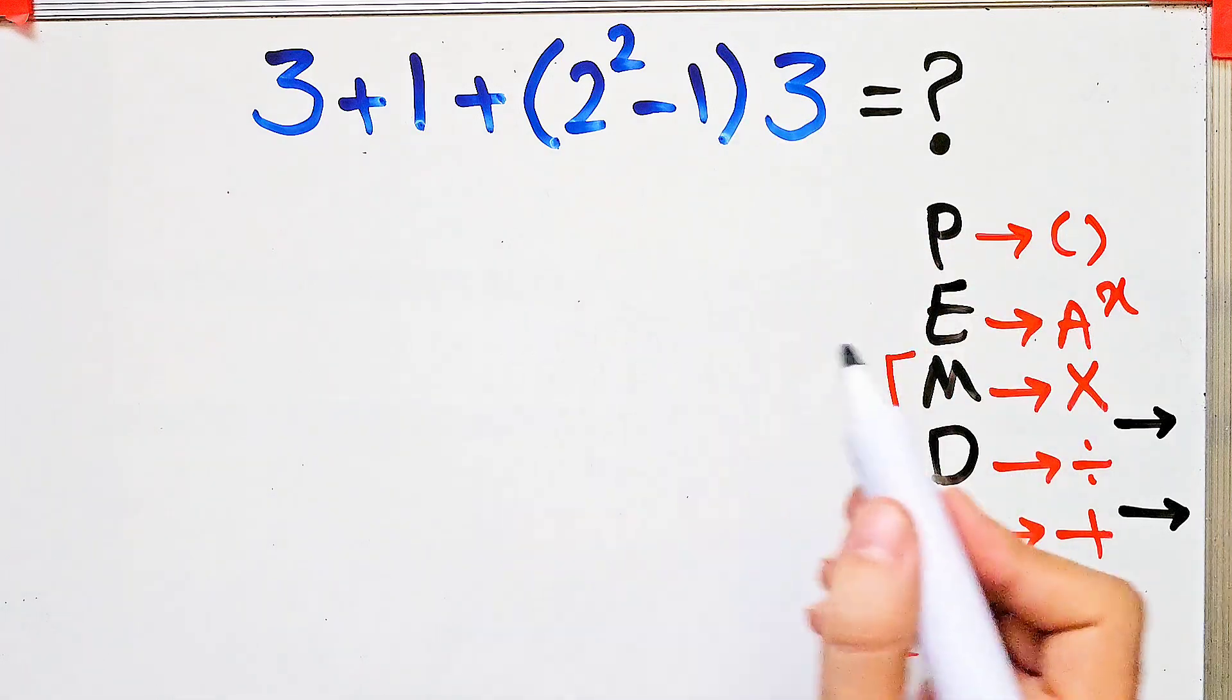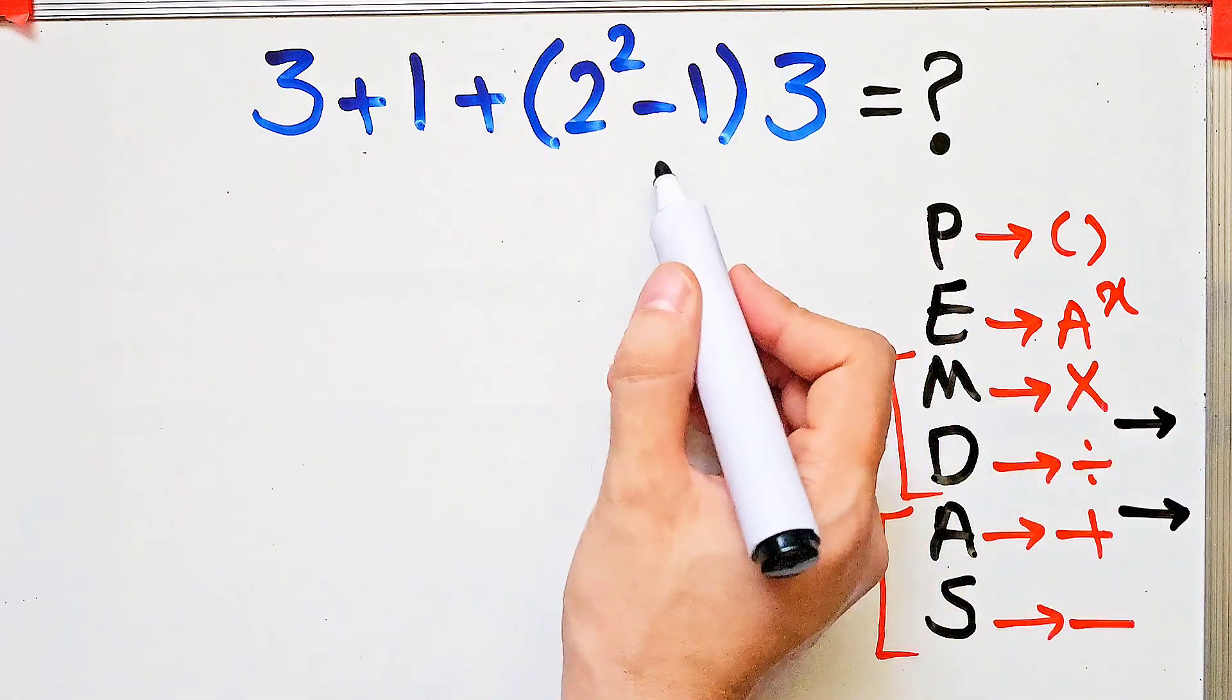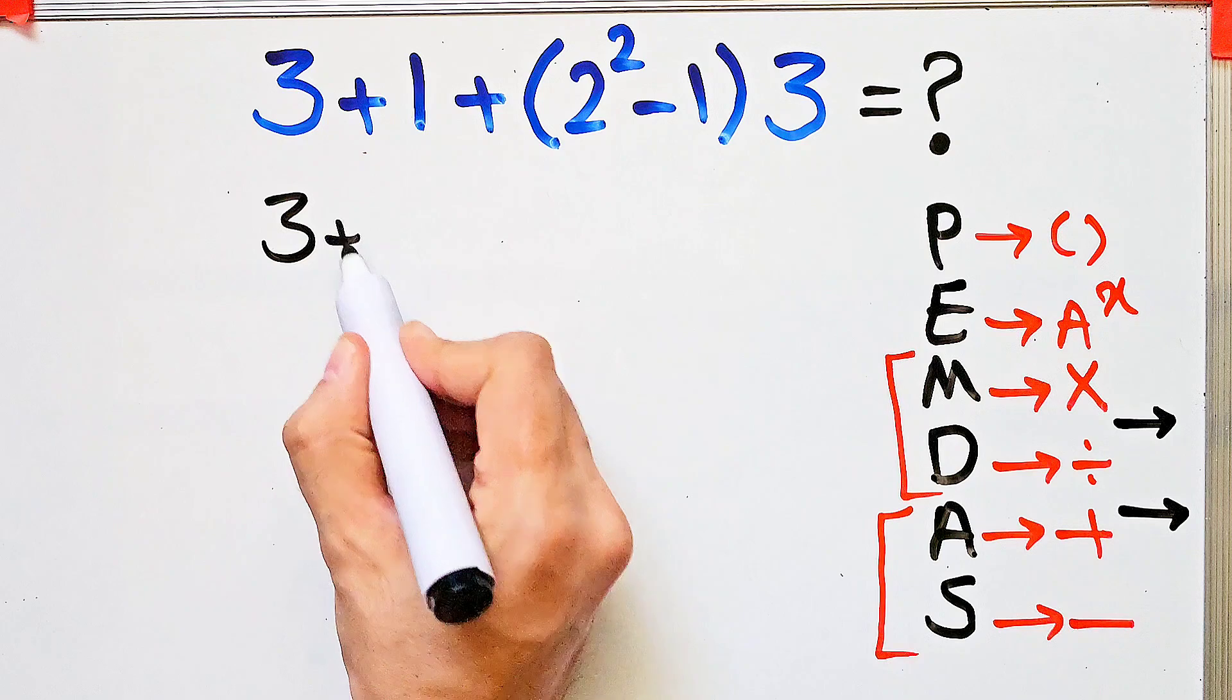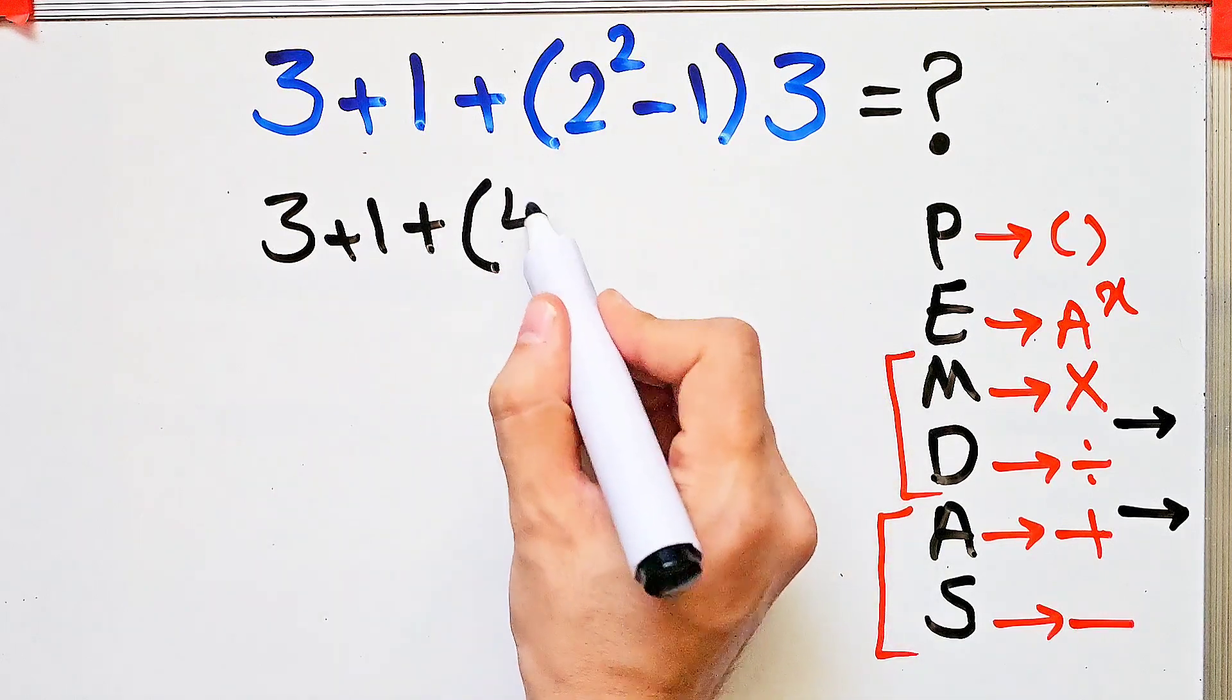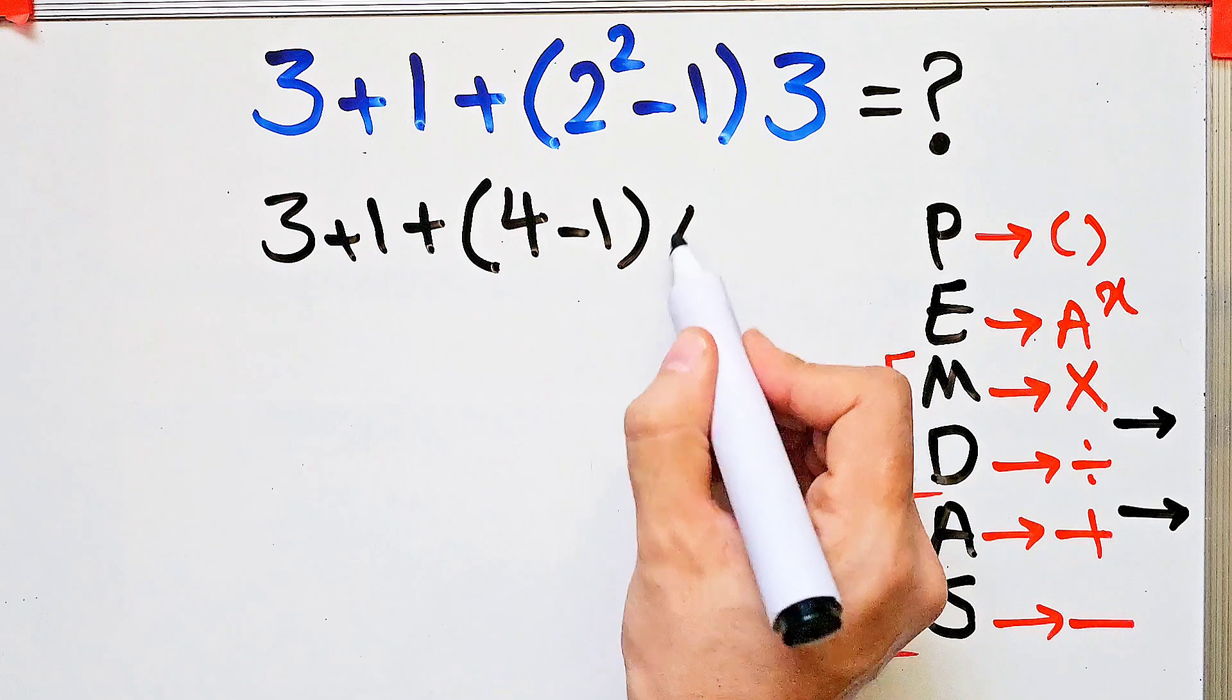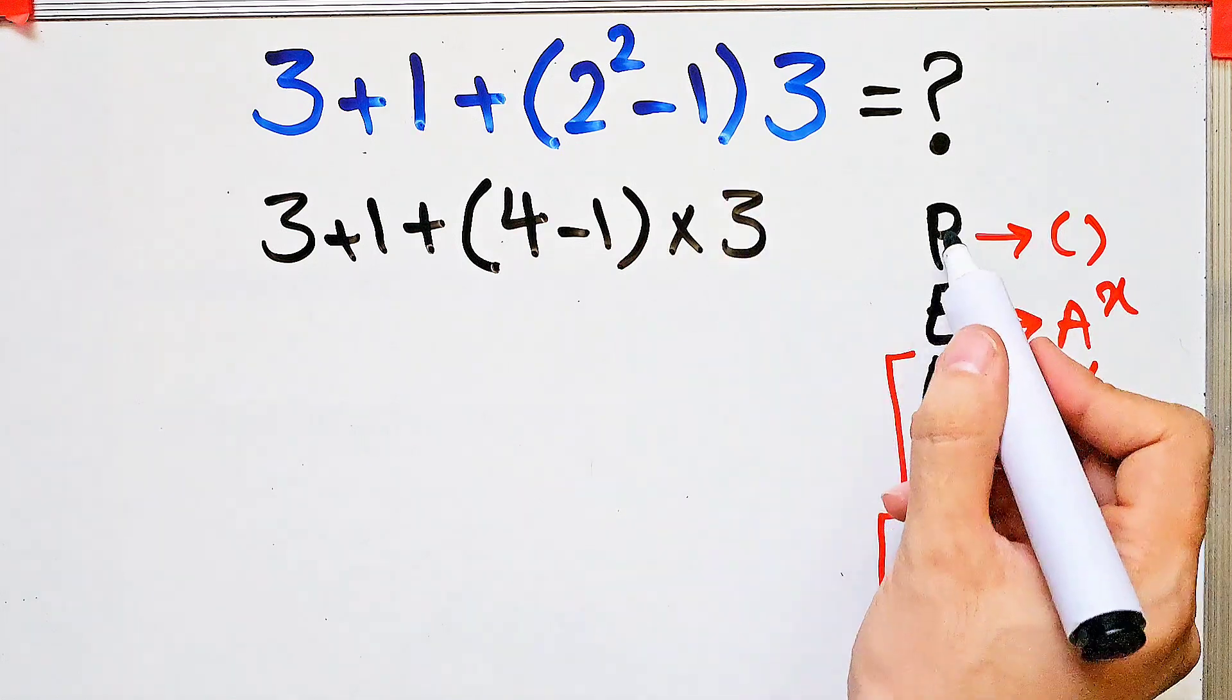First we do the parentheses. We have three plus one, then plus two to the power of two which equals four, then minus one in the parentheses, and after that times three. Again we simplify the parentheses: four minus one equals three.